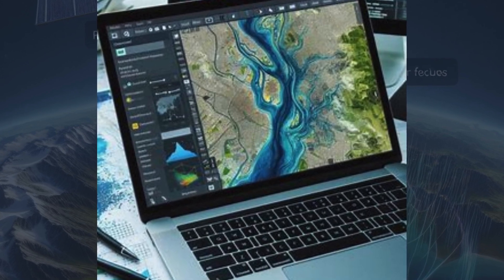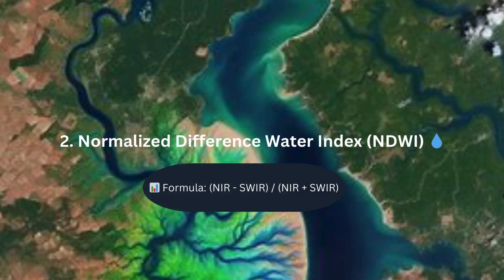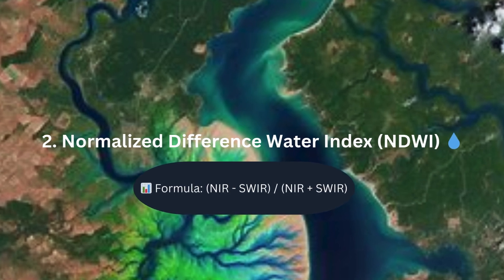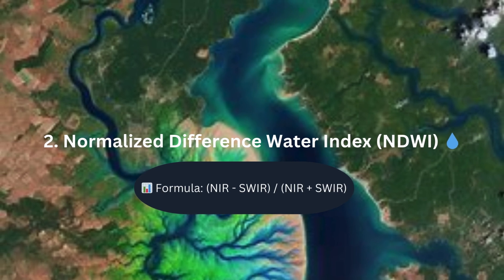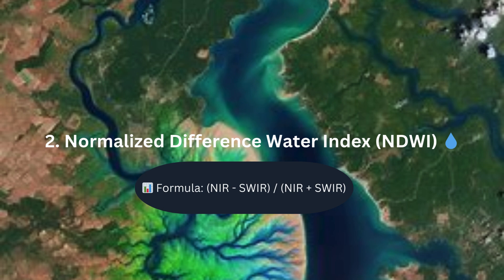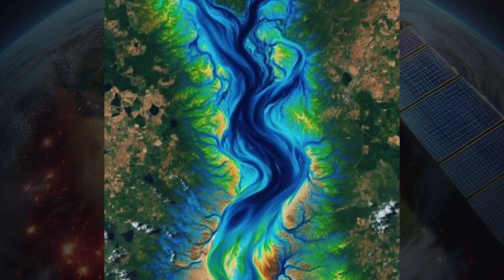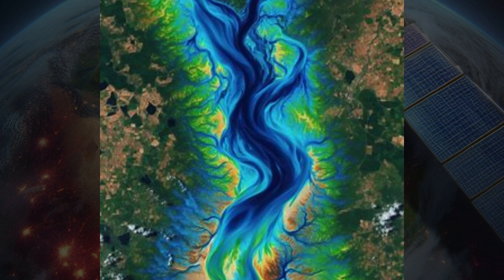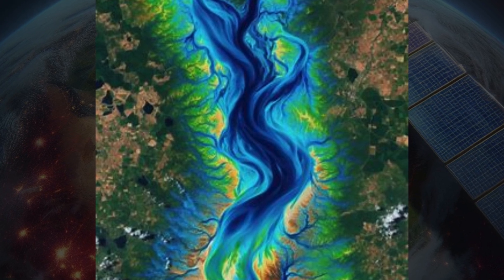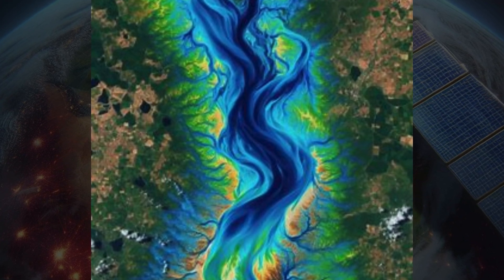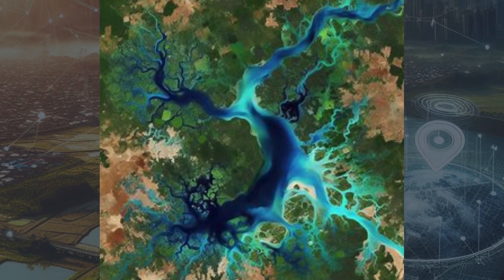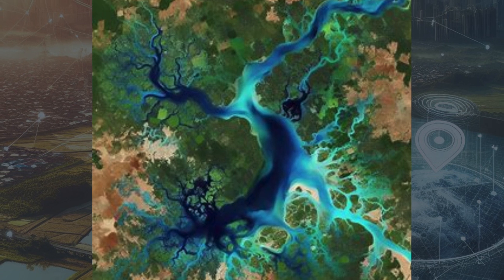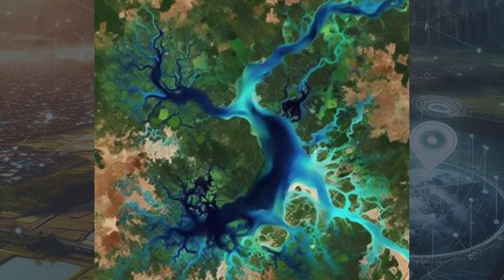Next is index number 2: the Normalized Difference Water Index, or NDWI. The formula is: NDWI = (NIR − SWIR) / (NIR + SWIR). The NDWI identifies water bodies by using the difference between near-infrared (NIR) and short-wave infrared (SWIR) light. Water absorbs near-infrared and reflects SWIR, so areas with water show strong contrast.